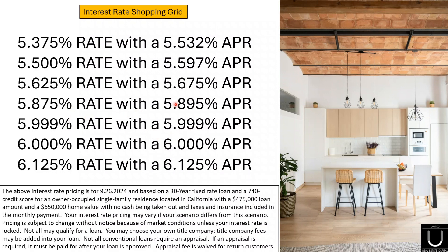When the APR is higher than the advertised rate, that lets you know there are fees associated with the advertised rate. The higher the APR is above the advertised rate, the more fees. Check this out — 5.875% with a 5.895% APR is a very, very small spread, meaning very little fees. As we go down, the rates get more expensive. The spread gets a little bigger, and this spread between 5.375% and 5.532% is nice and big, letting you know there are significant fees associated with that advertised rate. Fees aren't bad, but you need to know about them.